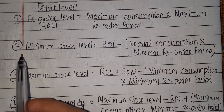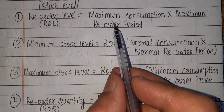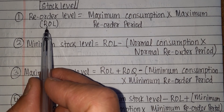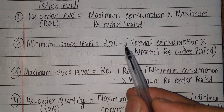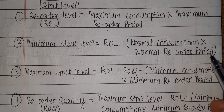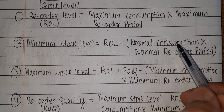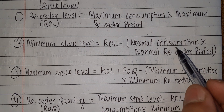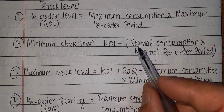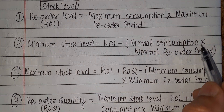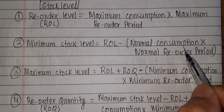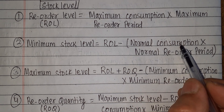So if you want to see this formula, you can see it. Minimum stock level: the minimum stock level formula is ROL — reorder level, short form ROL — minus normal consumption multiplied by the normal reorder period. Consumption means required, or needed. Normal consumption means normal average. And into normal reorder period — reorder period is lead time, so normal reorder period is normal average lead time.